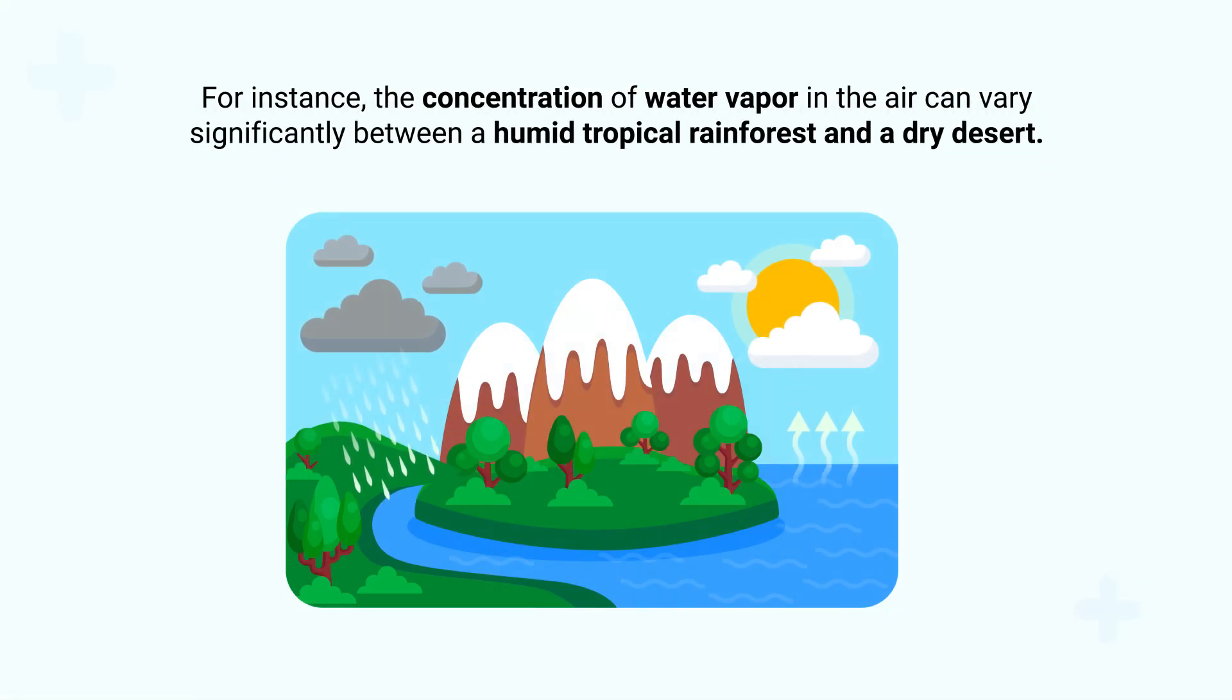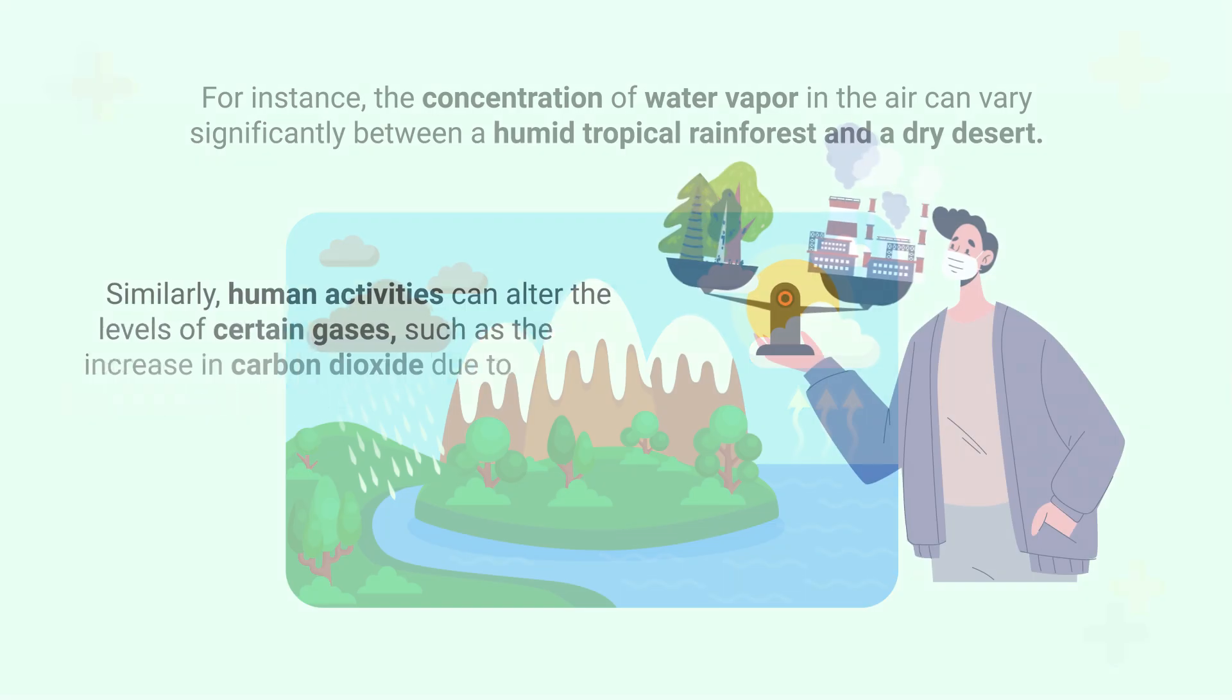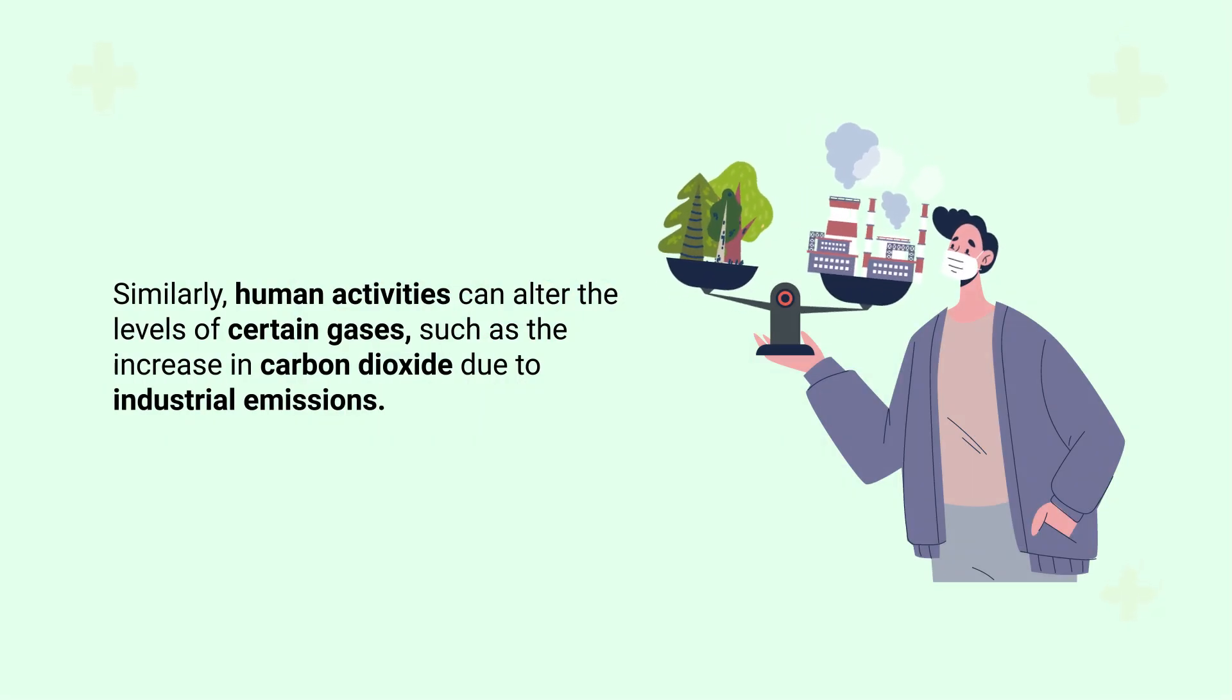For instance, the concentration of water vapor in the air can vary significantly between a humid tropical rainforest and a dry desert. Similarly, human activities can alter the levels of certain gases, such as the increase in carbon dioxide due to industrial emissions.